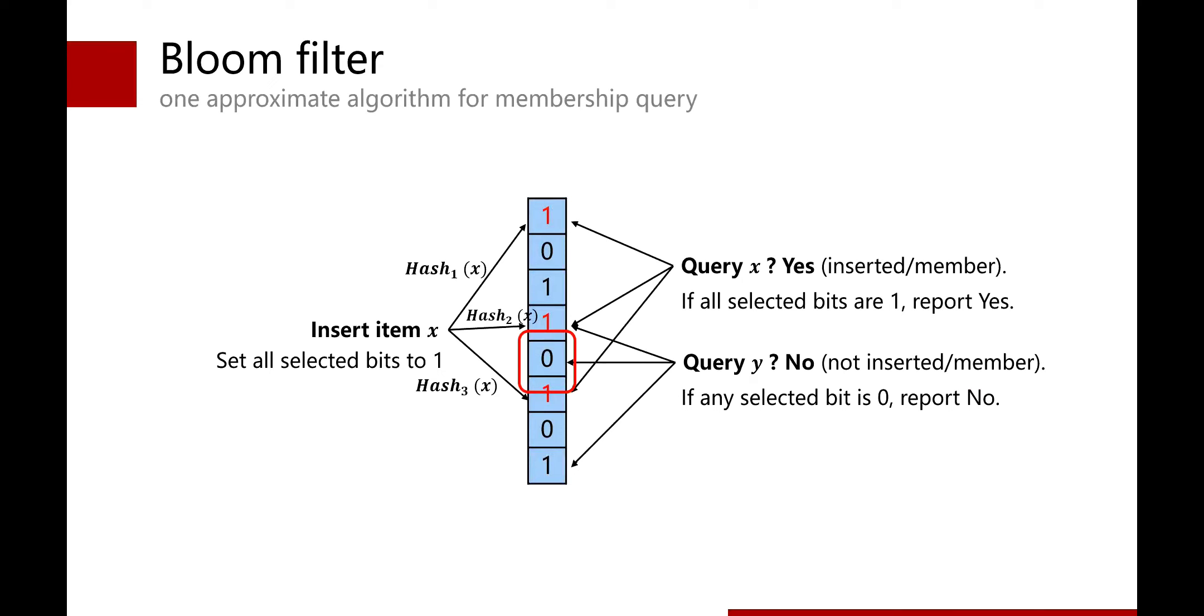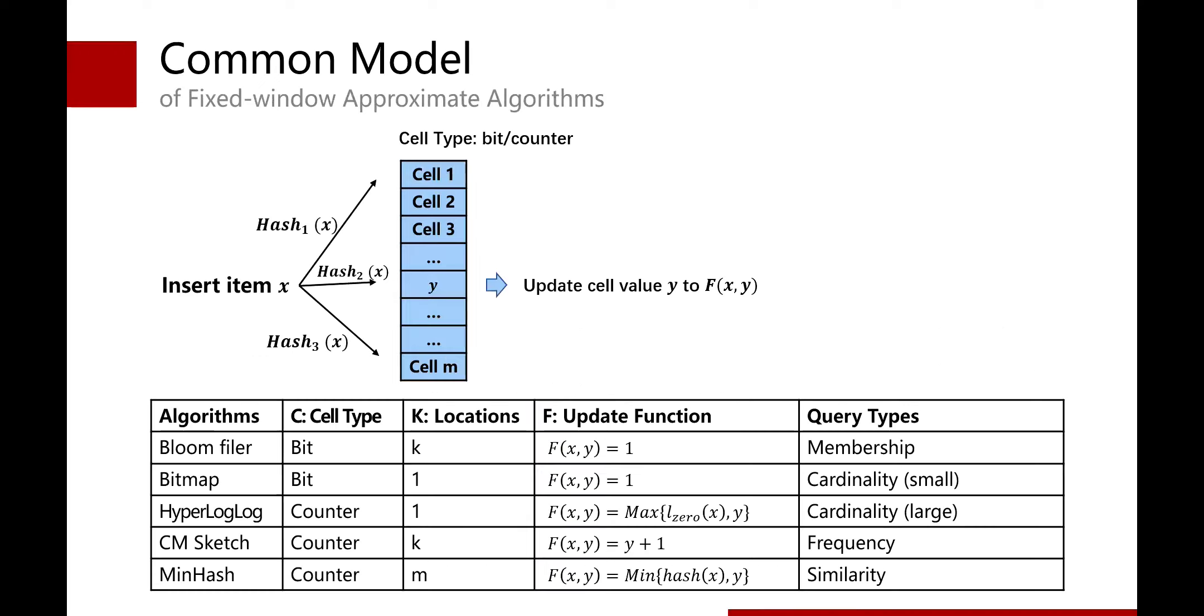It reports yes if all selected bits are 1, and reports no if there is at least 1 bit being 0. Consider one specific bit in the BloomFilter. The bit of 1 implies that some item has been inserted here, and the bit of 0 implies that no item has been inserted here.